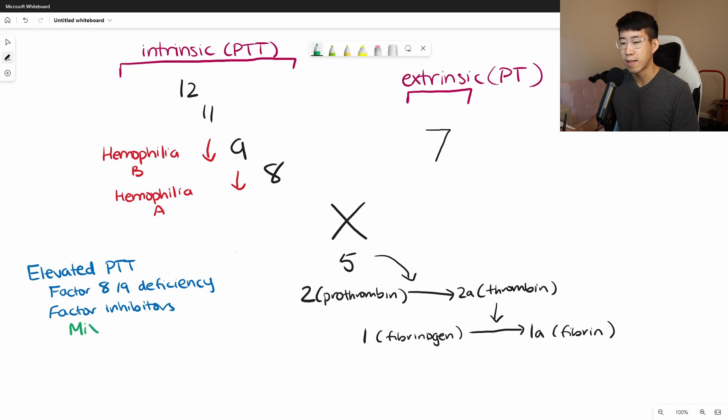The normal serum has all of the factor eight and nine in it. And so if that corrects the PTT, then the patient has a factor eight or nine deficiency.